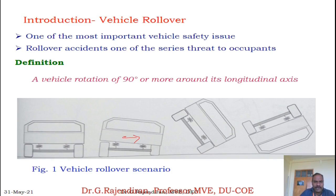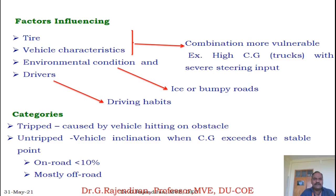With respect to the lateral longitudinal axis, when the vehicle is turned, it is said to be a rollover. There are a number of factors influencing rollover: one is the tyre, second is vehicle characteristics, third is environmental condition, and fourth is the driver. The tyre and vehicle characteristics combination plays a more dominant role in rollover analysis.